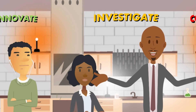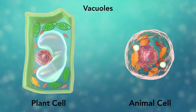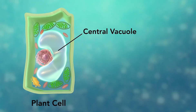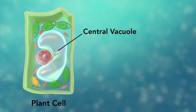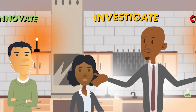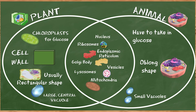Most animal cells don't have any of those things, but they do have vacuoles — just not large and central ones. Plants and animals differ mainly in their use and retrieval of energy, but there are more structures that they have in common.